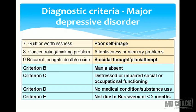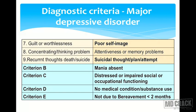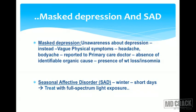Criterion A requires five out of these nine symptoms. Criterion B: mania must be ruled out and absent. Criterion C: there is distress or impaired social or occupational functioning. Criterion D: no medical condition or substance use. Criterion E: it should not be due to bereavement of less than two months' duration. Masked depression and seasonal affective disorder must also be ruled out as separate conditions.